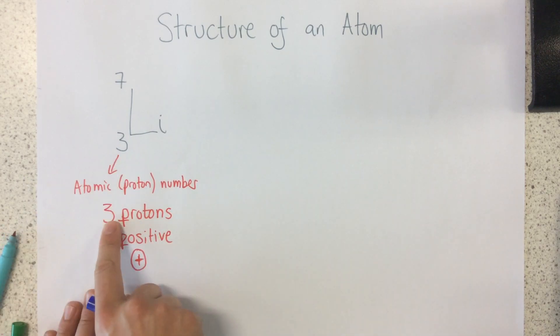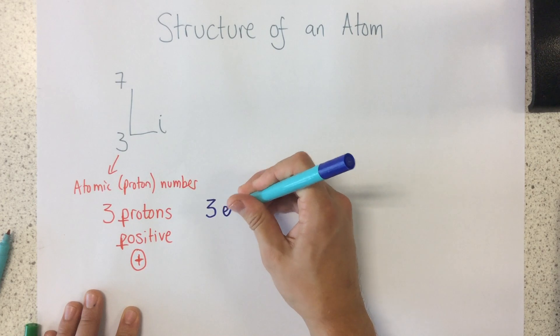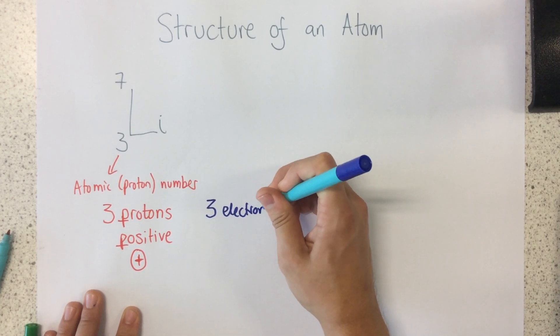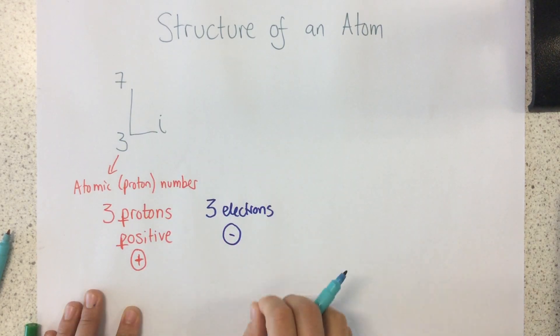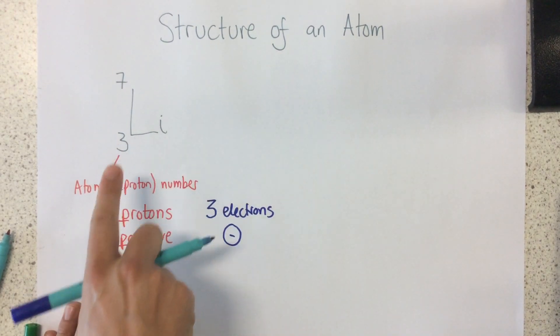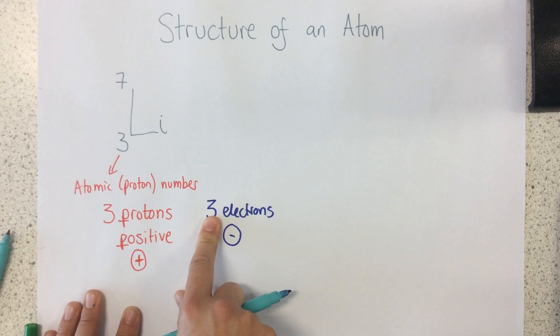So, if it has 3 protons, I know that it also has 3 electrons. Because in any atom, before any electrons have been transferred or anything like that, my number of positive protons will always balance out with my number of negative electrons. So if I've got 3 protons, I'm going to have 3 electrons.